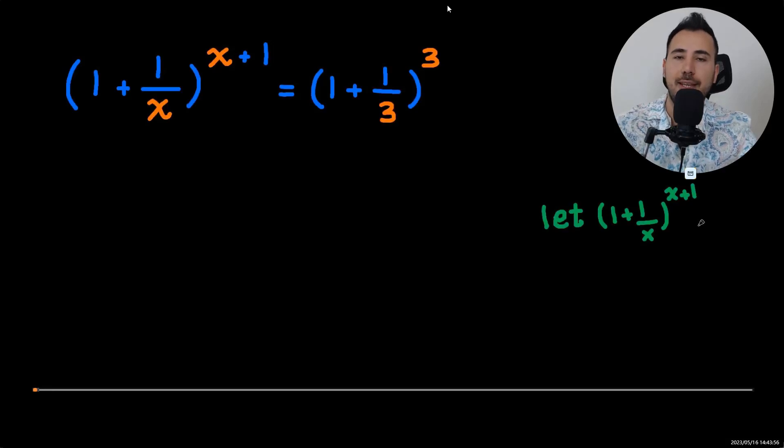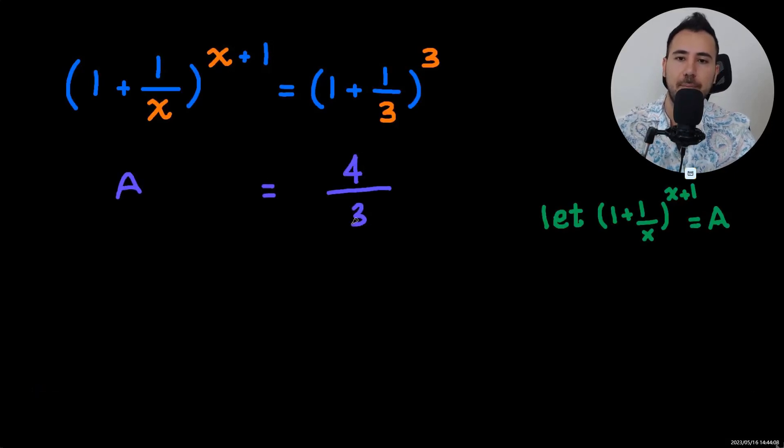We're going to solve the equation and then I will have an important question, make sure that you see the question. Okay, now let's begin. The left hand side we're going to call it A. Okay, and one plus one third is four over three, obviously.